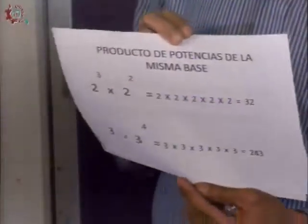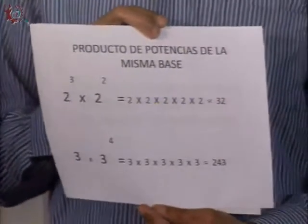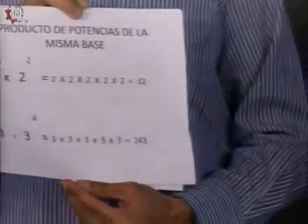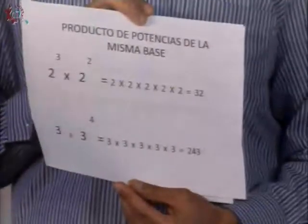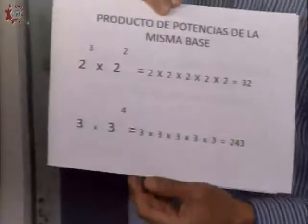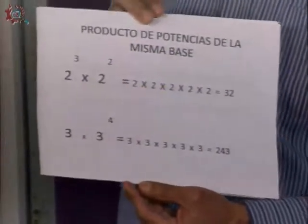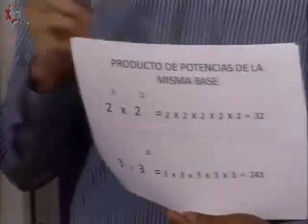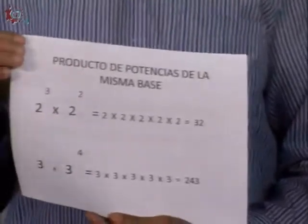El siguiente ejemplo: tres por tres elevado a la cuatro. Si se dan cuenta, no hay exponente en el primer tres. Cuando eso suceda, se considera uno. Está implícito, es invisible, pero es uno. En el resultado lógico, lo pongo una sola vez, y posteriormente el otro tres lo elevo o lo multiplico cuatro veces. Al hacer la multiplicación, me da doscientos cuarenta y tres. Es una forma de resolver un producto de potencias de la misma base.